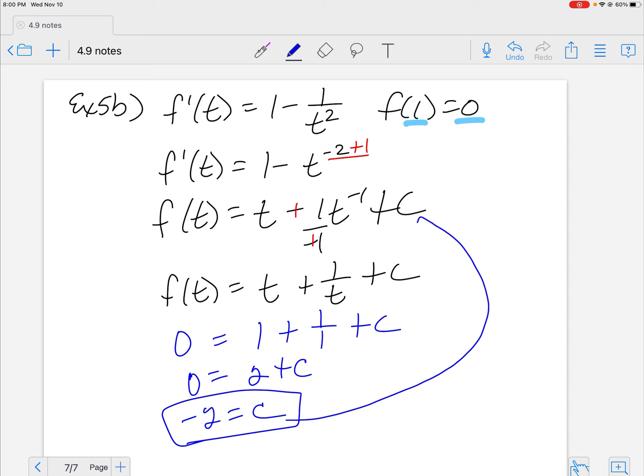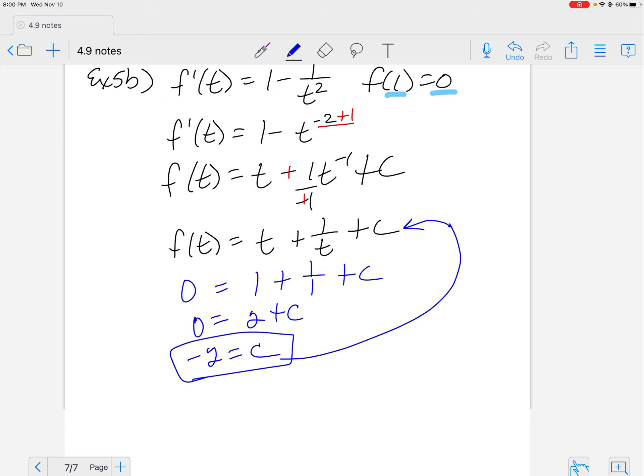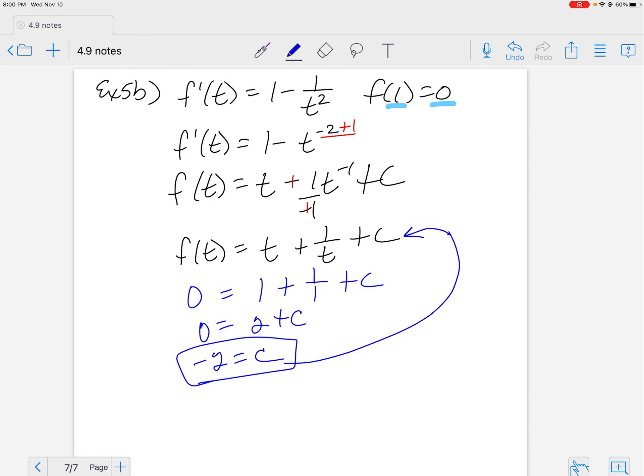So I now have 0 is equal to 1 plus 1 over 1 plus C. So 0 is equal to 2 plus C. I'm going to squeeze this in, so negative 2 is equal to C. And that goes in for that C. So my initial value here is going to be f of t is equal to t plus 1 over t minus 2, because that's what my constant is.